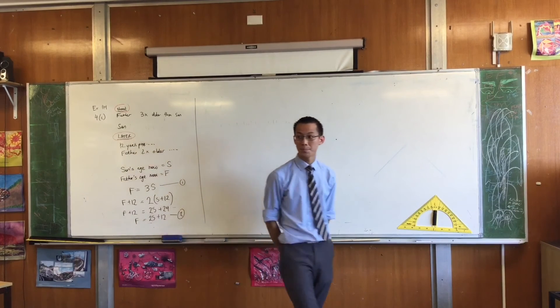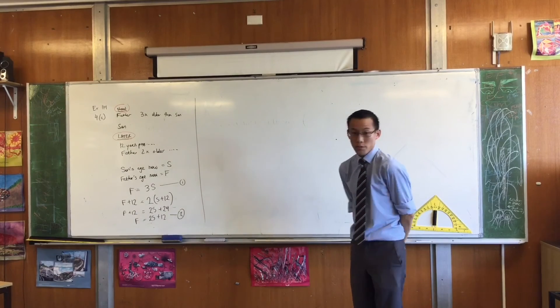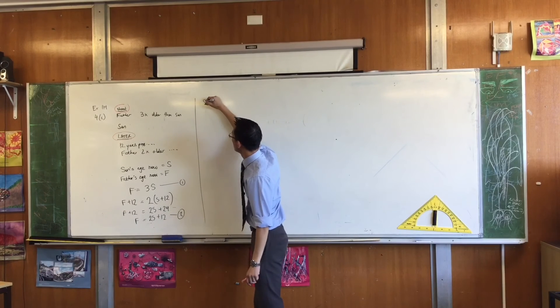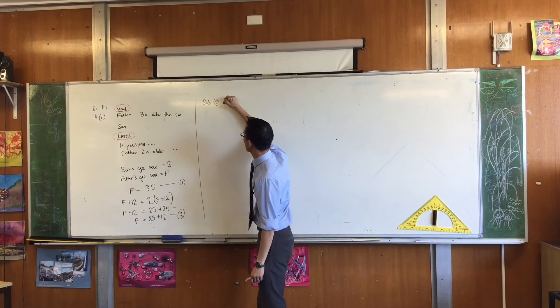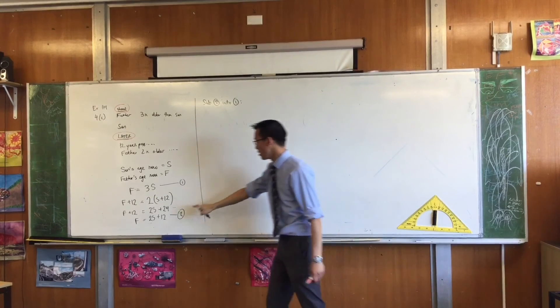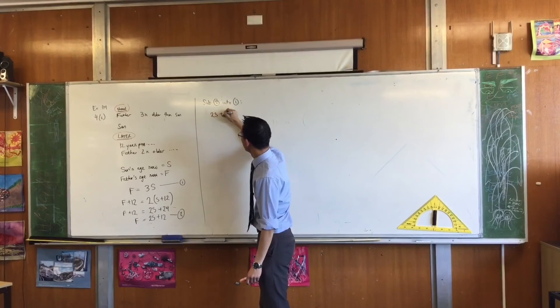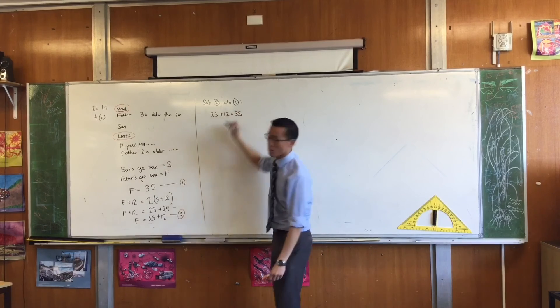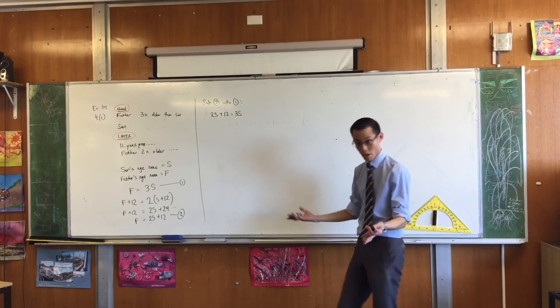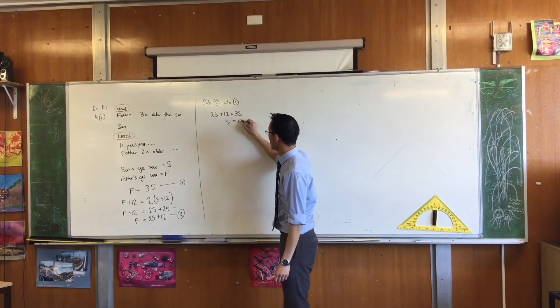What would you like me to do? Sub. Okay, so both of them have f as the subject, so I might as well let 1 and 2 equal to each other. So I'm going to sub, doesn't actually matter which one goes into which. Okay? So I've got here 2s plus 12 equals 3s. Yeah? Yeah? So s therefore must be equal to 12. Right? What is that? That's the son's age right now.